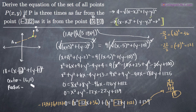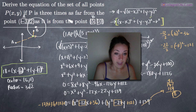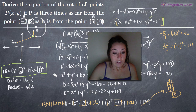So P of xy is the set of all points that make up this circle, and all of the points along this circle are three times as far away from A as they are from B. We would give this equation as our final answer, because this is the equation that constitutes the set of all points P of xy that meet this criteria. That's your final answer.